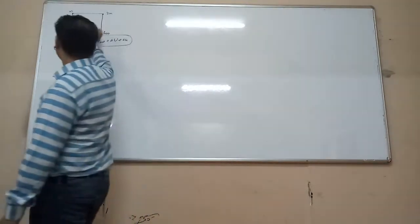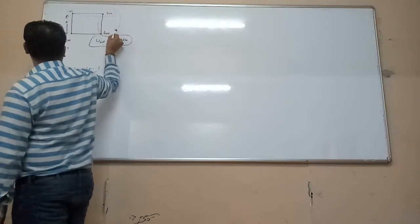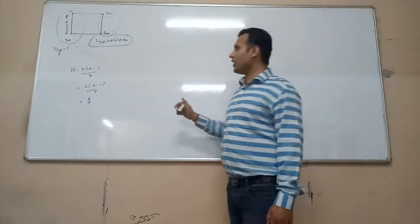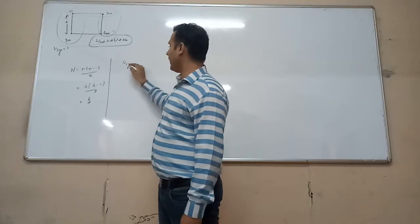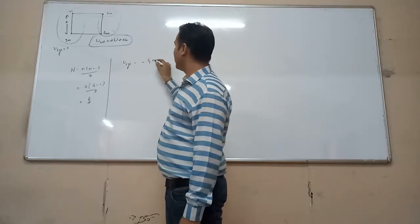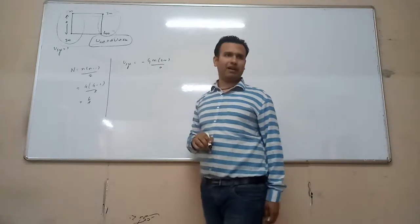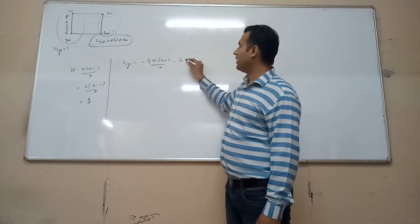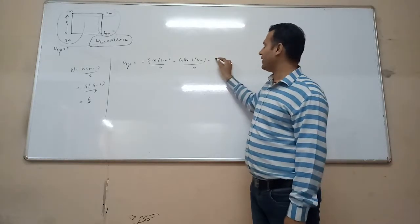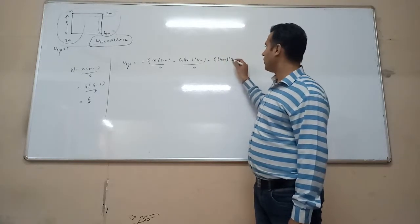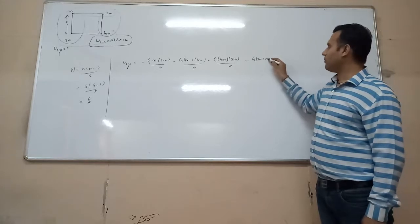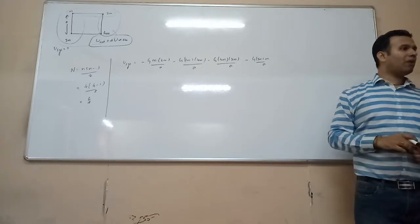Out of the 6 pairs, 4 pairs are along the sides of the square — this one, this one, this one, and this one — making 4 side pairs. The remaining 2 pairs are the diagonals, which are the opposite vertices. The diagonal distance is √2 × A, so the separation for those pairs is a√2.